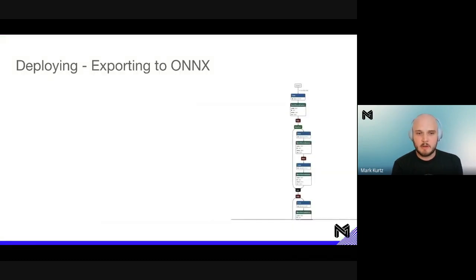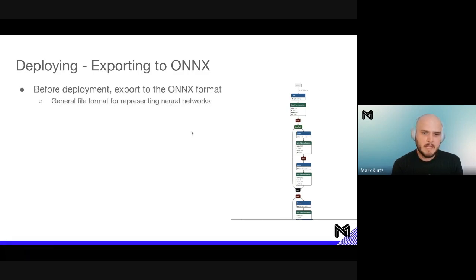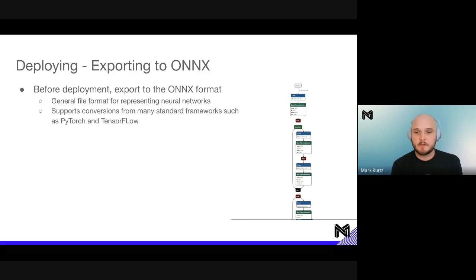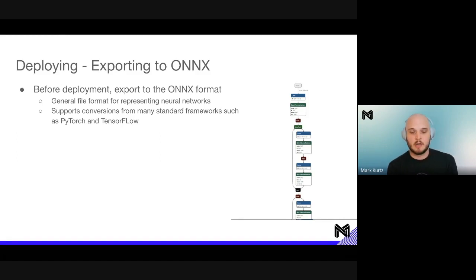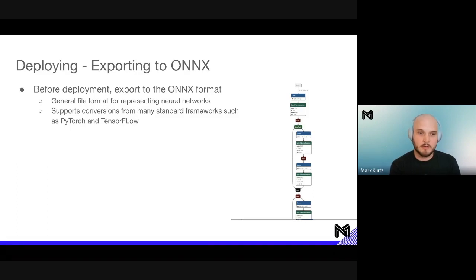Before deploying with DeepSparse, we need to export to ONNX. ONNX is a general file format for representing neural networks — it supports conversions from many standard frameworks such as PyTorch and TensorFlow, representing them in the exact same graph format. This makes it very easy for inference engines to target a single format. No matter where you trained or what framework you used, you can target ONNX so the inference engine doesn't have to support all different frameworks. This is why DeepSparse takes in ONNX files as input.